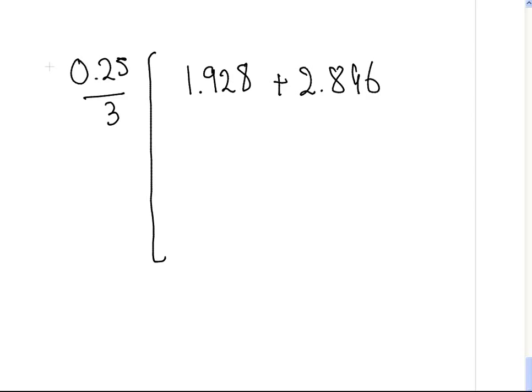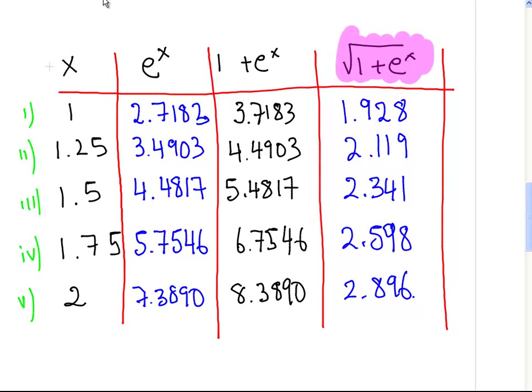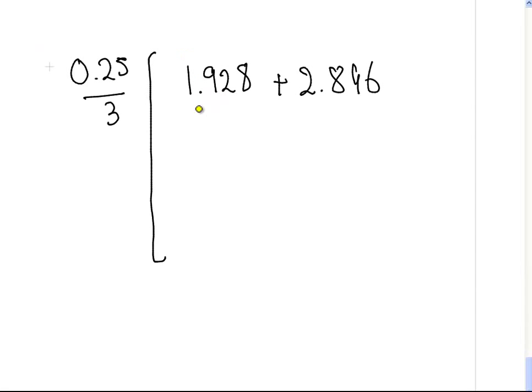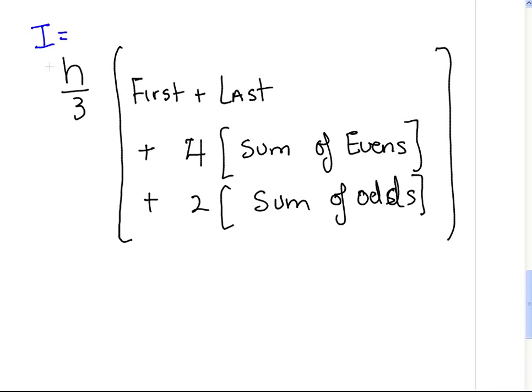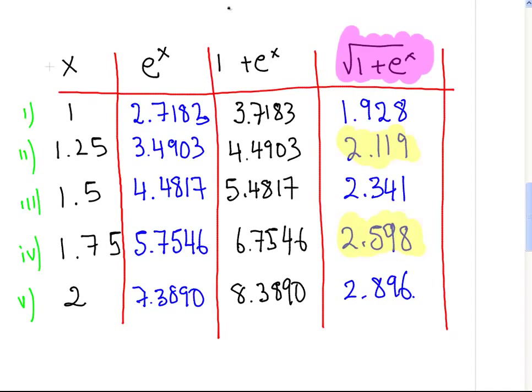Now, what we're going to do is 4 times the sum of the evens. So the evens in this case were 2.119 and 2.598. So 4 times the sum of those, that is equal to plus 4 times 2.119 plus 2.598. And now 2 times the sum of the odds, and this is the only odd one here. We don't include the first or the last one as an odd for this algorithm, so this is 2.341.